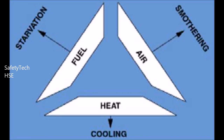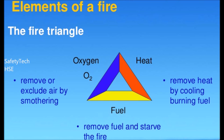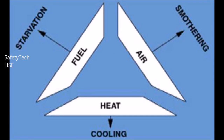1. Starvation: the extinction of fire by starvation is applied in three ways. First, by removing combustible material from the neighborhood of the fire. Examples of this are the drainage of fuel from burning oil tanks, the working out of cargo at a ship fire, the cutting of trenches in peat, heath and forest fires, the demolition of buildings to create a fire stop, and counter burning in forest fires.